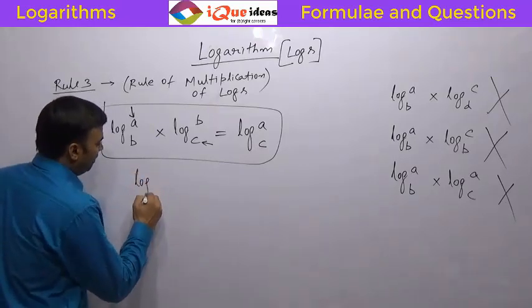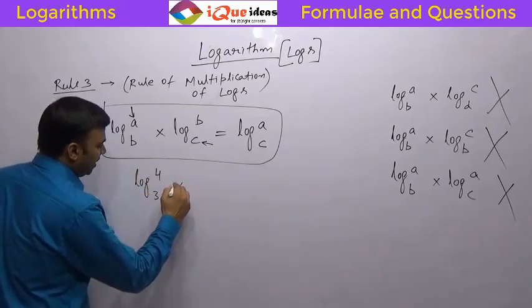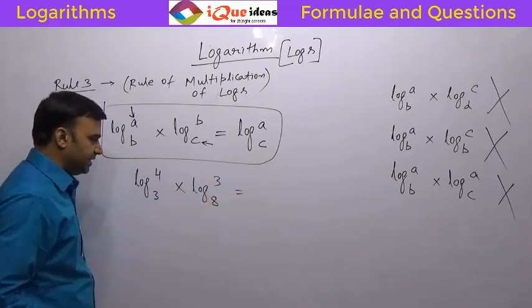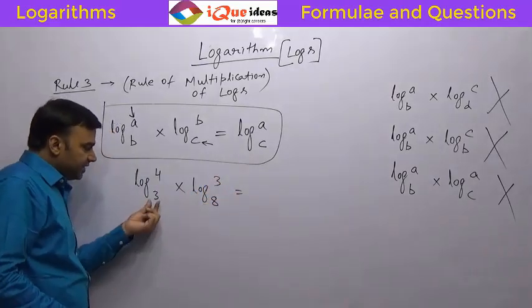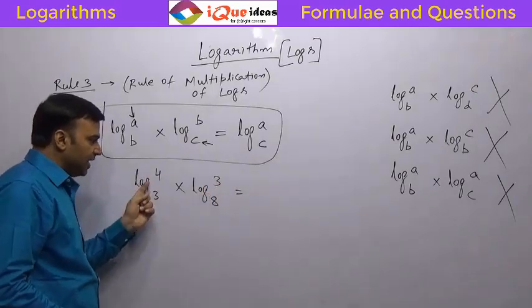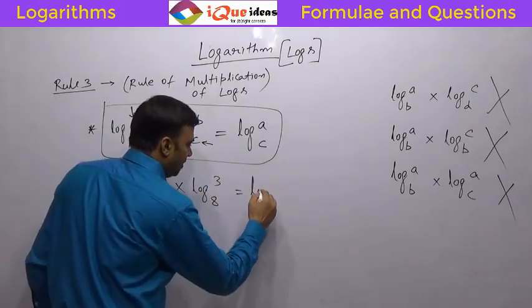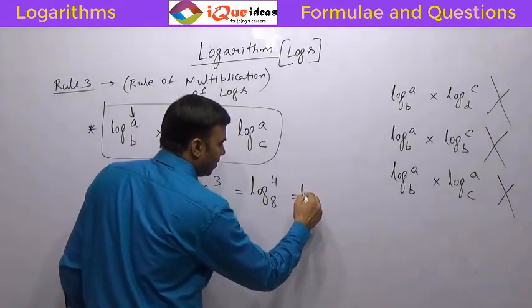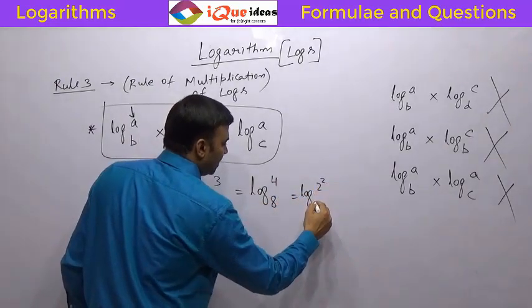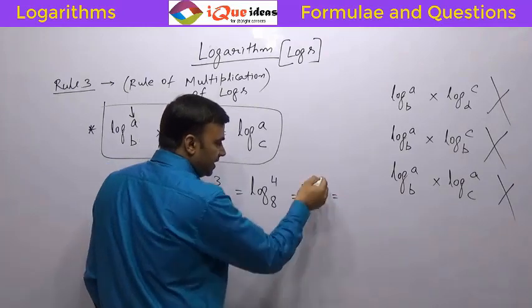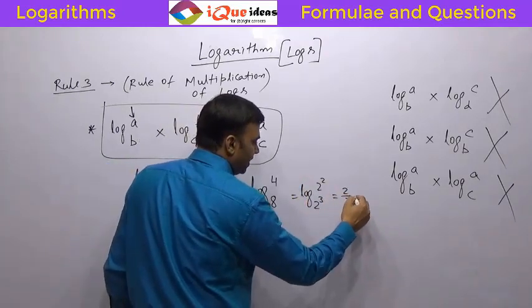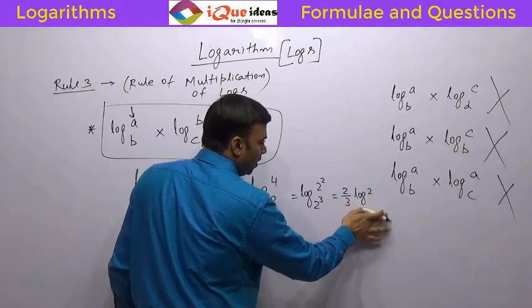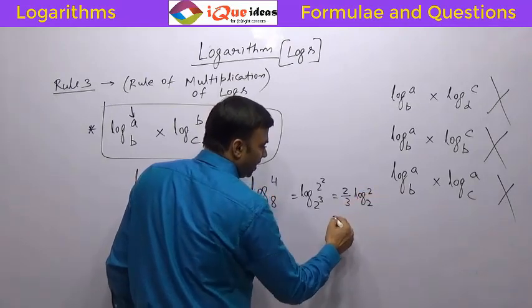For example, log of 4 to the base 3 into log of 3 to the base 8 — this 3 and this 3 are same, so they get eliminated and the answer is log of 4 to the base 8. We can further simplify: it is log of 2 squared to the base 2 cubed, so the powers 2 and 3 come outside, giving 2 by 3 times log 2 to the base 2. Since log 2 to the base 2 is 1, the final answer is 2 by 3.